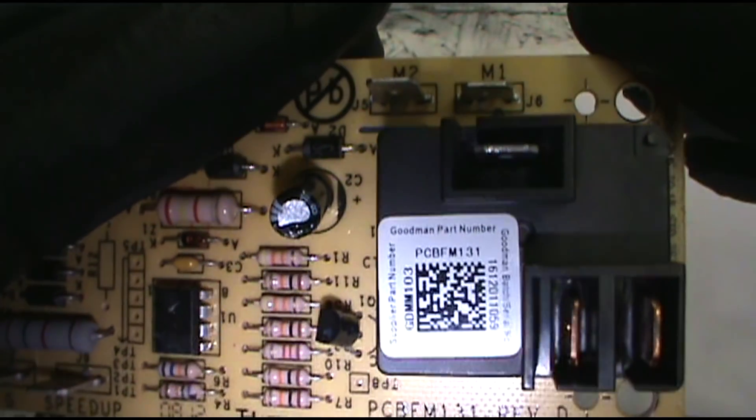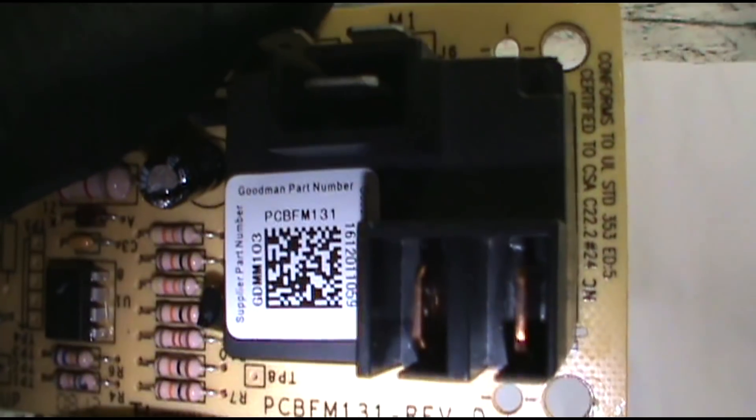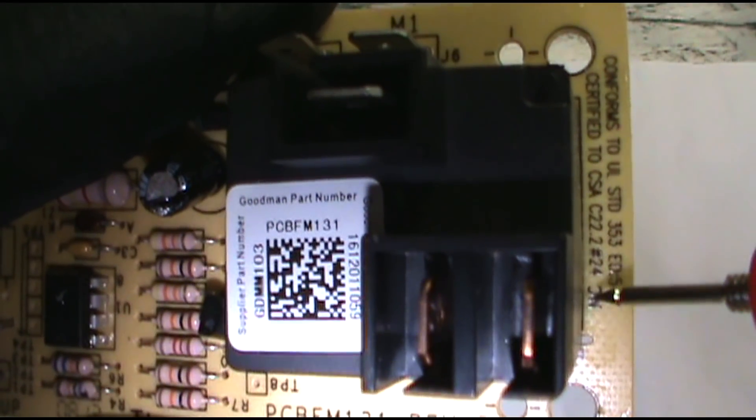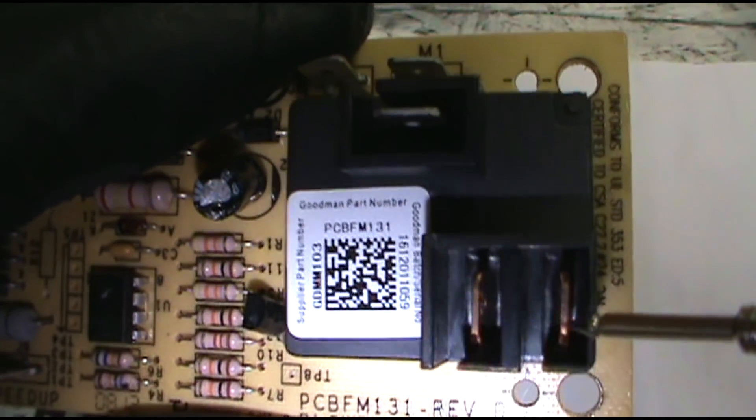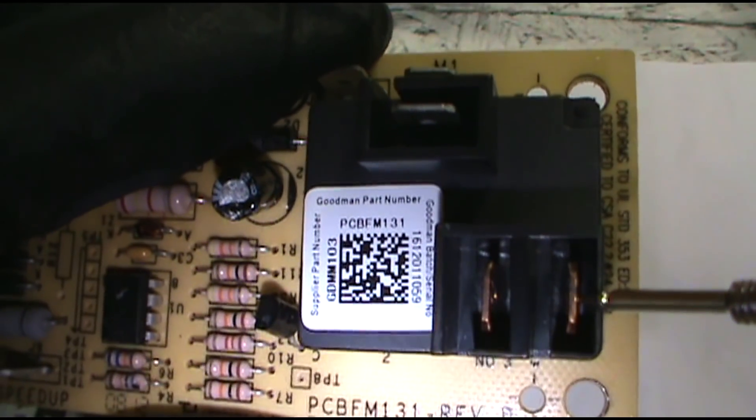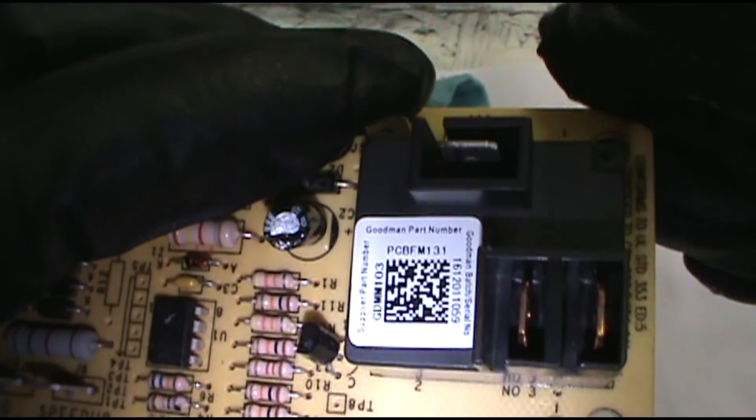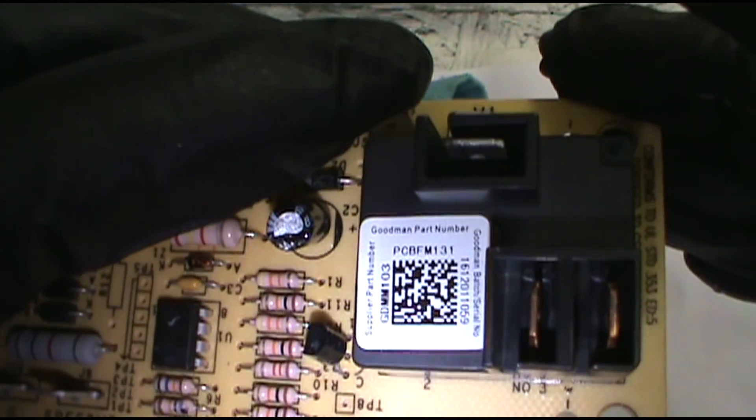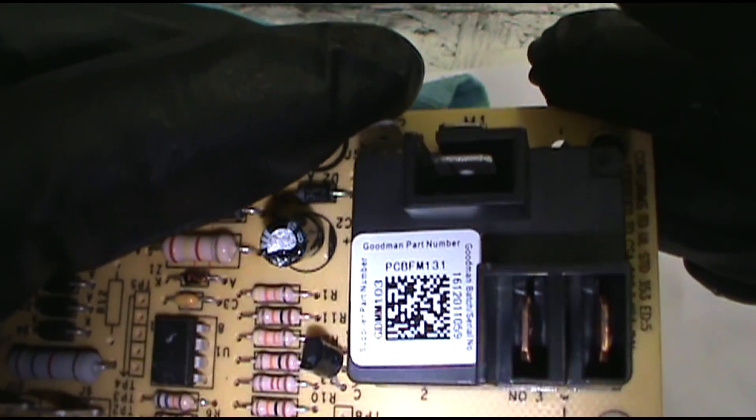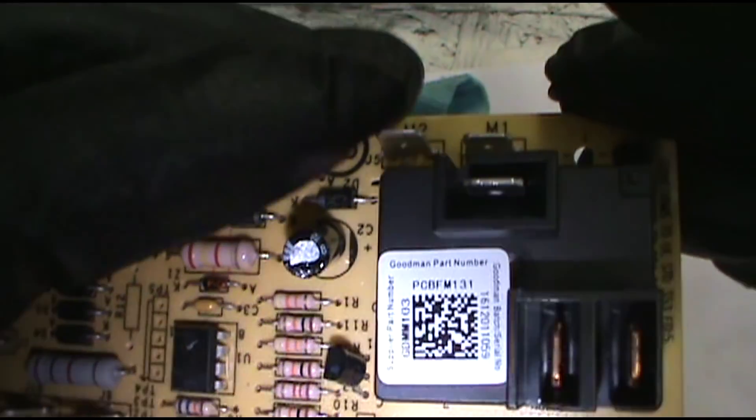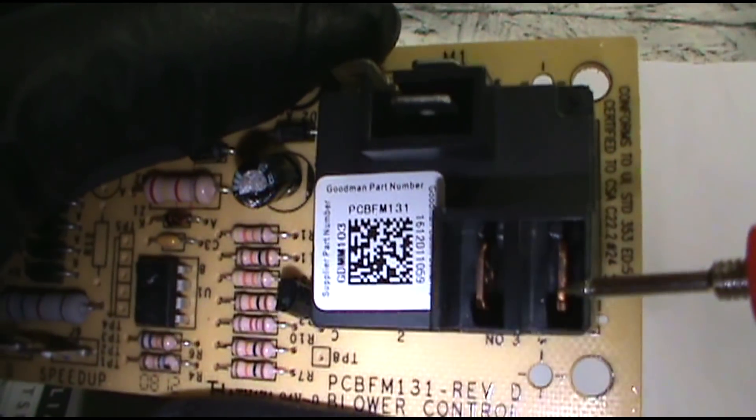And this NC here stands for normally closed. And this will be coming off a heat sequencer. It's a safety measure, so if the sequencer, you know, if the heat strips kick on but the blower, the fan motor doesn't come on, this will cause it to come on just to keep from burning the apartment down.